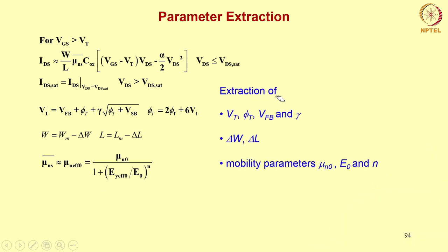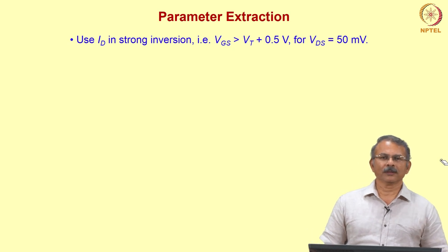To summarize the parameters to be extracted: first, Vt, phi_T, Vfb, and gamma for the threshold voltage and body effect. Second, delta W and delta L, which appear in the equations for channel width and channel length in terms of mask width and mask length. Finally, mobility parameters mu_n0, E0, and n.